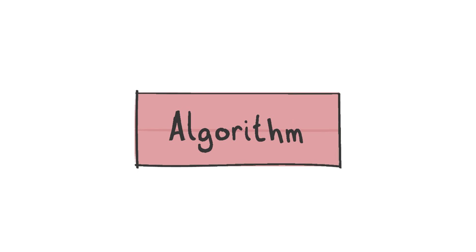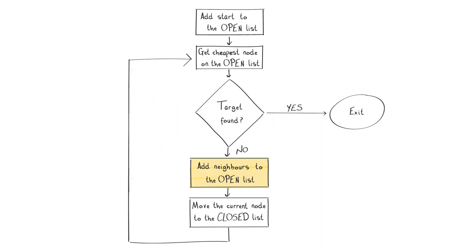Let's take a look at the jump point search algorithm. What's on screen right now is the A* algorithm, because jump point search is an optimization to this. We begin by adding the start node to the open list, then begin the search loop by finding the cheapest costing node on the open list. We check to see if this is the target node — if it is we stop and exit the loop. If not, we add each of the current node's neighbors to the open list, checking if the neighbor is already on a list and calculating its costs, then move the current node from the open list to the closed list.